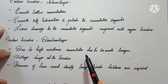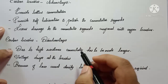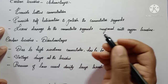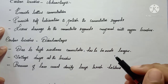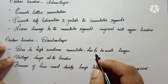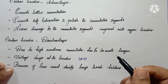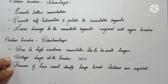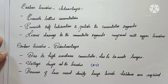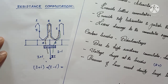The disadvantages of carbon brushes are: first, due to the high resistance of the carbon brushes, the commutator has to be made very large. Second, the voltage drop at the brushes is very high compared to copper brushes — it can be almost 2 volts for carbon brushes. Third, because of low current density, large brush holders are required.